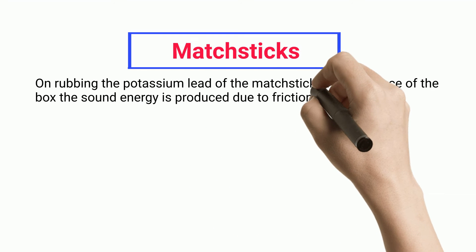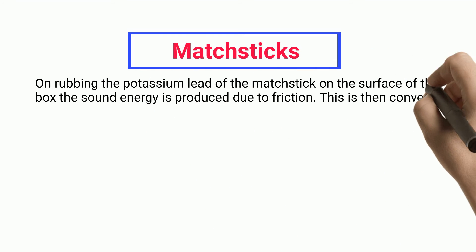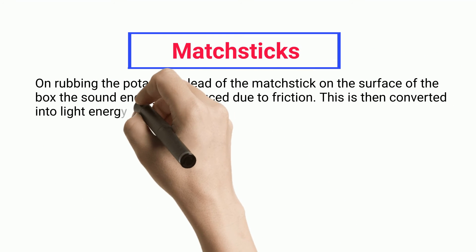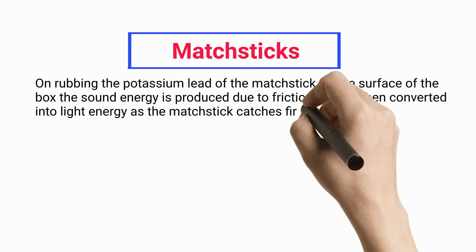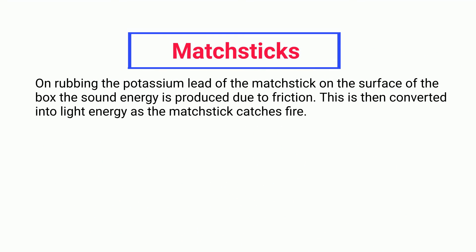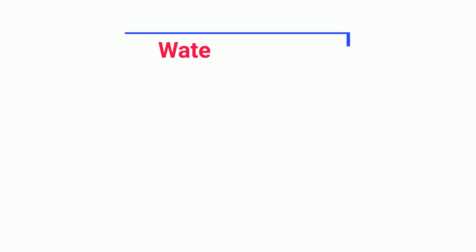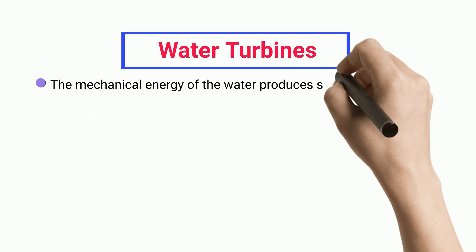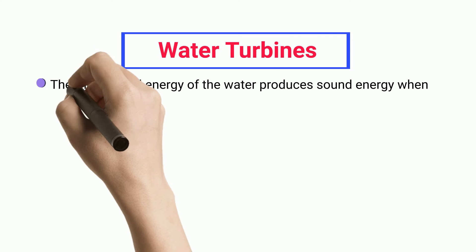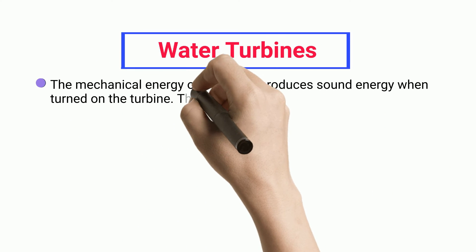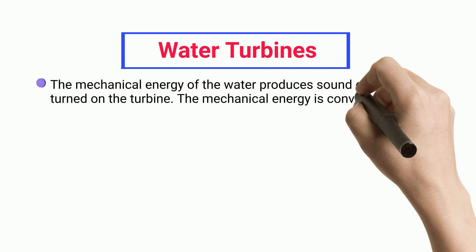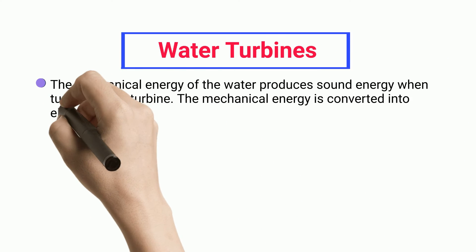Matchsticks: On rubbing the potassium lead of the matchstick on the surface of the box, sound energy is produced due to friction. This is then converted into light energy as the matchstick catches fire.